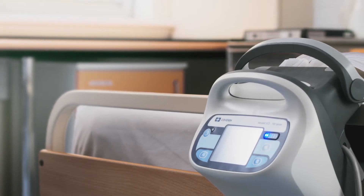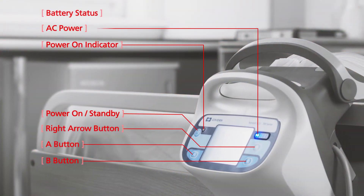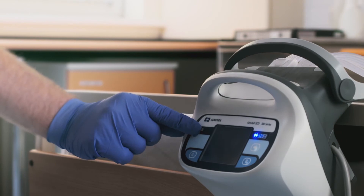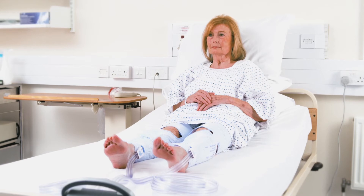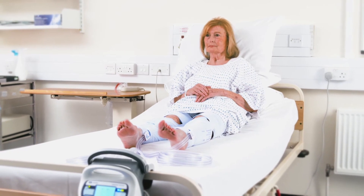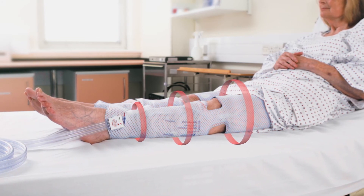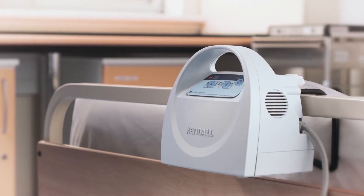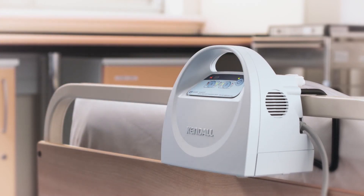The Kendall SCD700 series controller has a simple, easy-to-understand interface with four buttons and three indication spots. Press the power on/standby button to begin operation. If using leg sleeves, no further intervention is required, as the controller will automatically detect whether a knee length or thigh length sleeve is being used and then begin to deliver the set pressure pattern of 45-40-30 mmHg. The same one-touch start-up operation applies when using leg sleeves with the SCD Express controller.